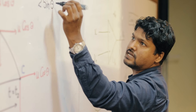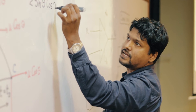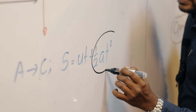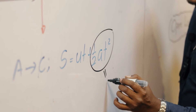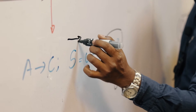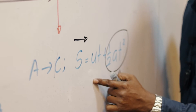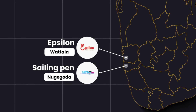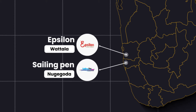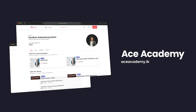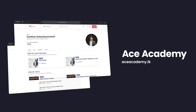2 sin theta cos theta is equal to sin 2 theta. The equation becomes zero since there is no acceleration when you apply the equation to the horizontal direction. Join us at one of our 3 convenient class venues or from the comfort of your home with our online platform aceacademy.lk, serving all of Sri Lanka.